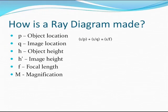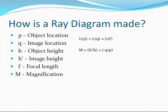These variables can be related through several equations. The first is the inverse of object location plus the inverse of image location is equal to the inverse of the focal length. The second is the magnification is equal to the image height over the object height is equal to the negative image location over the object location.